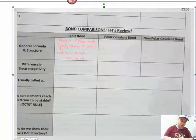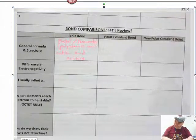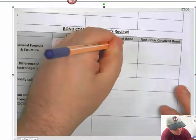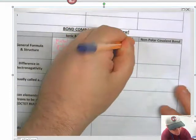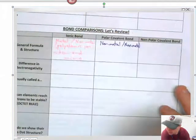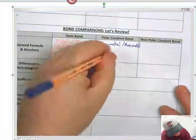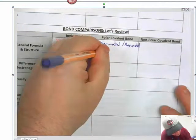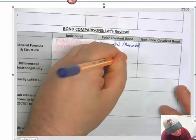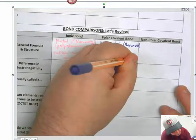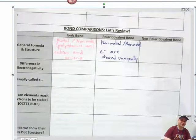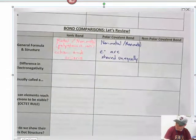Then we get to my favorite one, polar covalent bond. Remember that this is non-metal and non-metal. Remember here that these electrons are shared unequally. That is polar, just so you know.